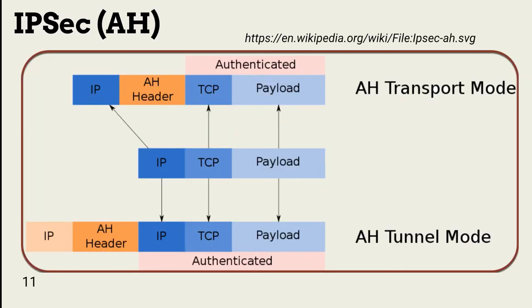AH only provides authentication in one of two modes: Transport and Tunnel. In Transport mode, the TCP header and payload are authenticated. In Tunnel mode, AH also authenticates the original IP header. In either mode, no encryption is provided.